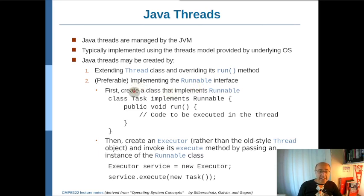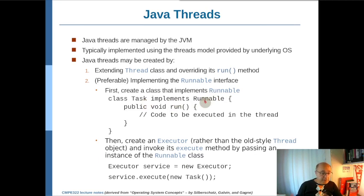In this example here in the slide, we're creating a class with the name Task. Of course, you could give any name you wish, but it should be implementing the Runnable interface. If you're implementing the Runnable interface, the interface enforces that you implement a method named run. In other words, you're overriding that method.